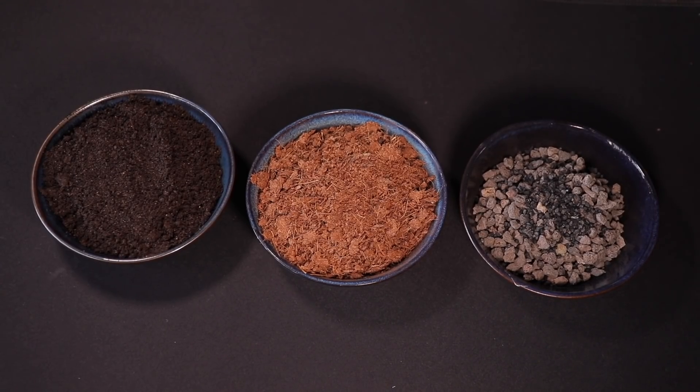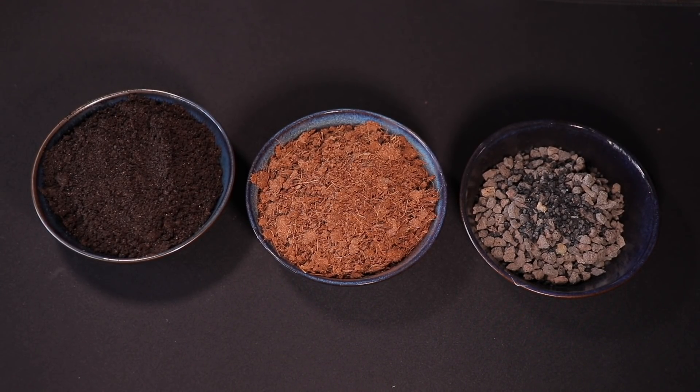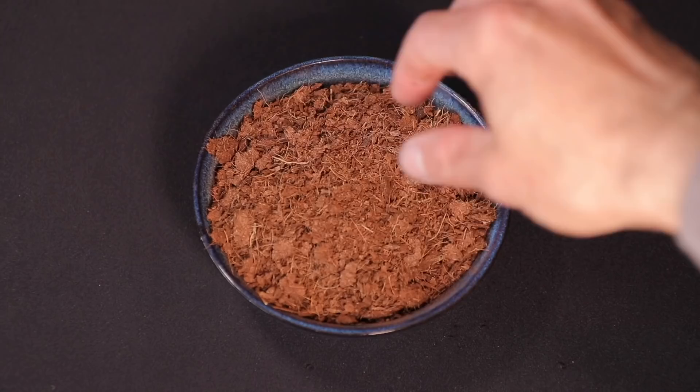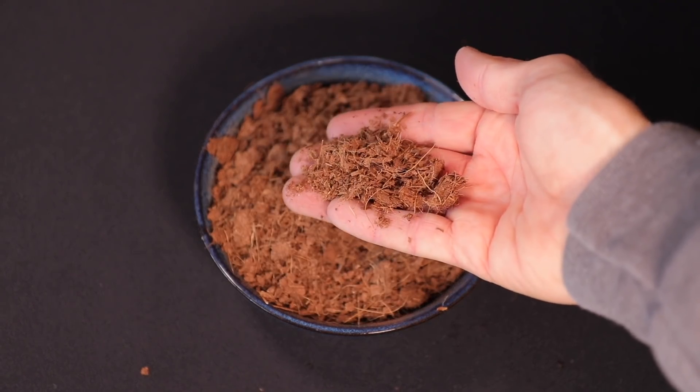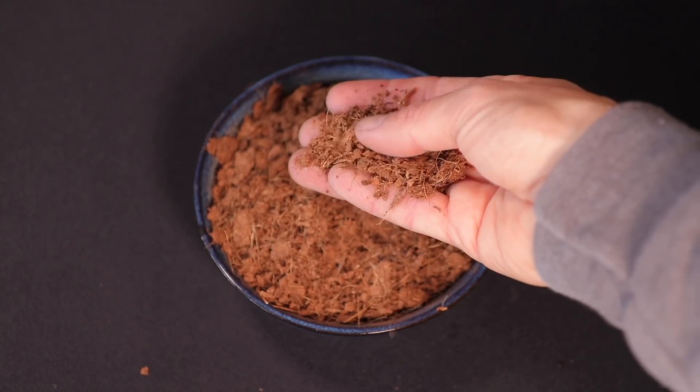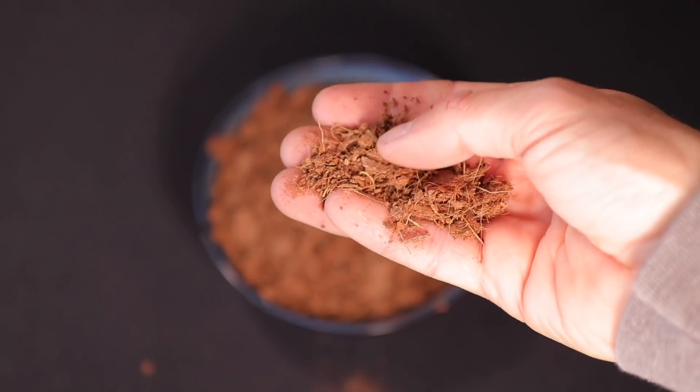For the substrate, I use equal parts of vermicast, coir, and small lava rock. Coir is the fibrous husks of the inner shell of a coconut. It helps maintain structure within the substrate and improve drainage. As I am not making a drainage layer in this terrarium, the coir will help to maintain this drainage. It also helps with moisture retention.